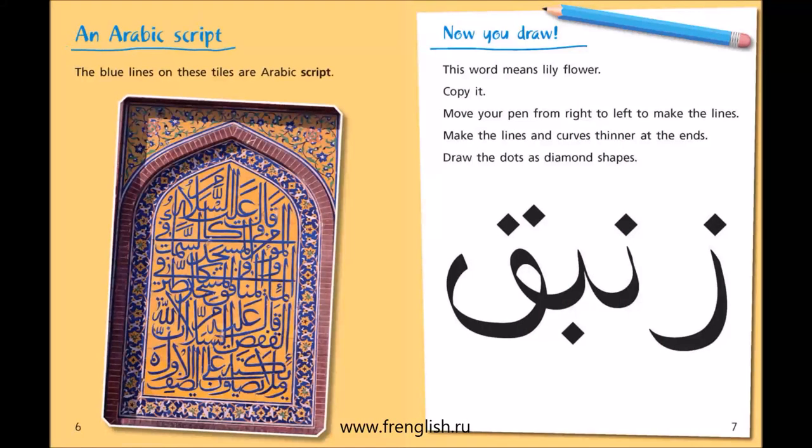An Arabic script. The blue lines on these tiles are Arabic script. Now you draw. This word means lily flower — copy it. Move your pen from right to left to make the lines. Make the lines and curves thinner at the ends. Draw the dots as diamond shapes.